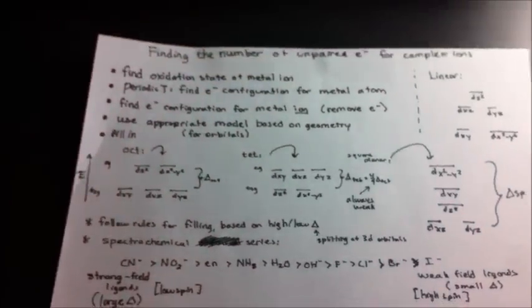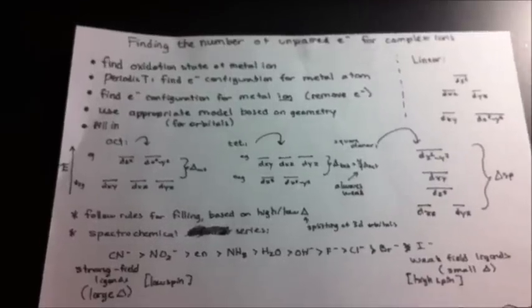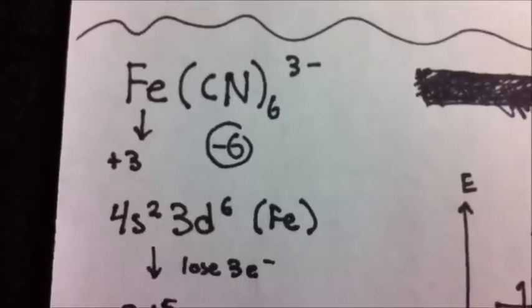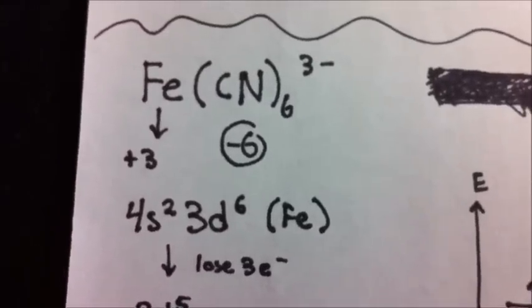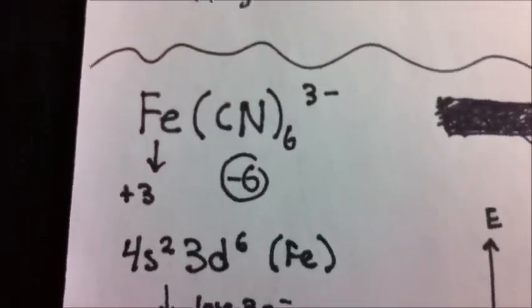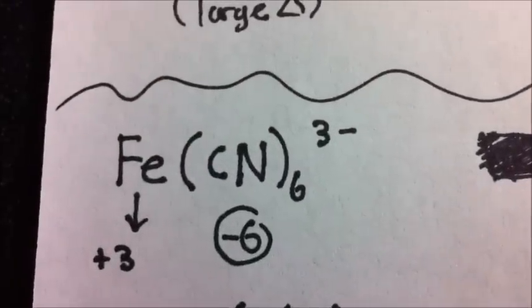Here's the spectrochemical series. Now that we understand the rules for finding the number of unpaired electrons, let's go ahead and look at some example problems.